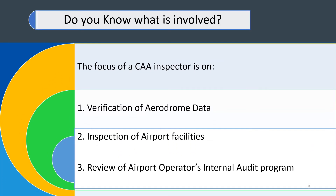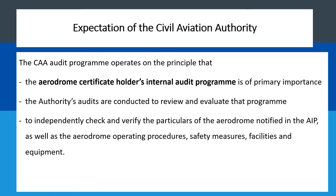The question was: do you know what is involved? We first looked at the CA inspectors and the focus of their inspections. We observed that basically their inspection is to verify aerodrome data, confirm that facilities meet minimum standards, and review actions taken by the airport operator in terms of their self-inspection program. This is the focus of the CA inspectors.